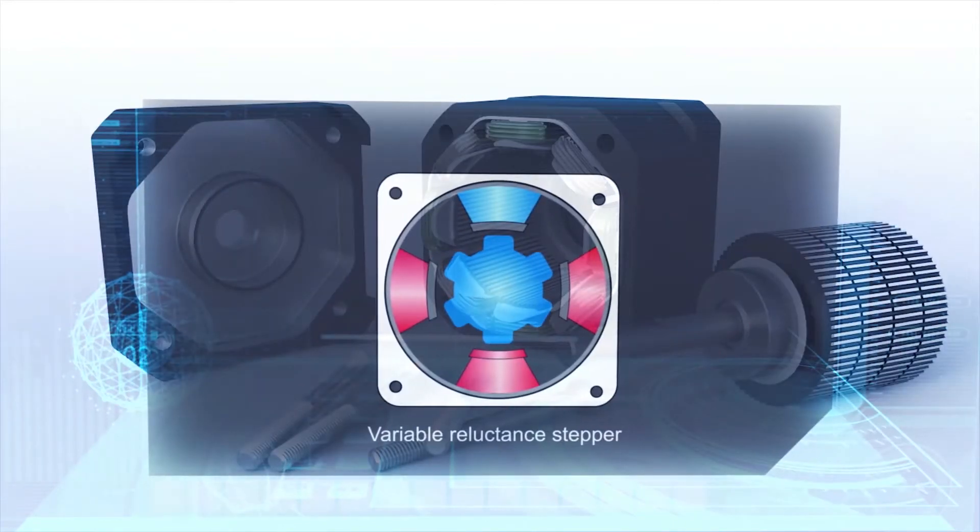Variable Reluctance Stepper: this stepper motor uses a non-magnetized soft iron rotor. The rotor has teeth that are offset from the stator, and as we activate the windings in one particular order, the rotor moves respectively so that it has minimum gap between the stator and the teeth of the rotor.